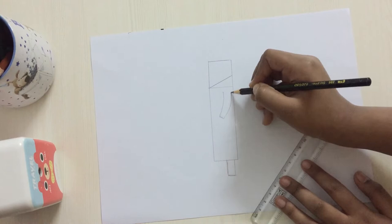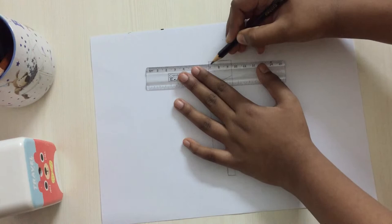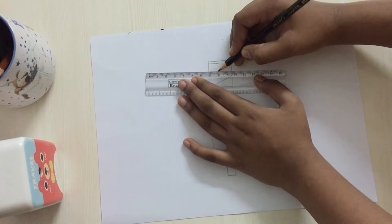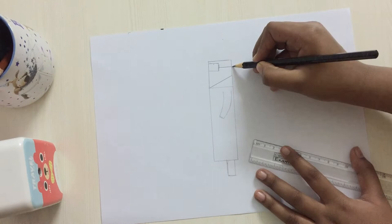Now let's draw glasses. Come right there and draw a square. Now draw a line right here and then draw an ear like that.